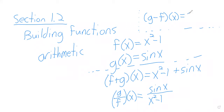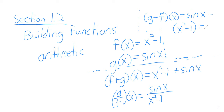Let's also do a third example to illustrate: you always want to be a little careful when you have subtraction. G minus f of x is the sine of x minus f of x. That subtraction is going to distribute, so this is the sine of x minus x squared plus 1. Minus a negative becomes a positive.